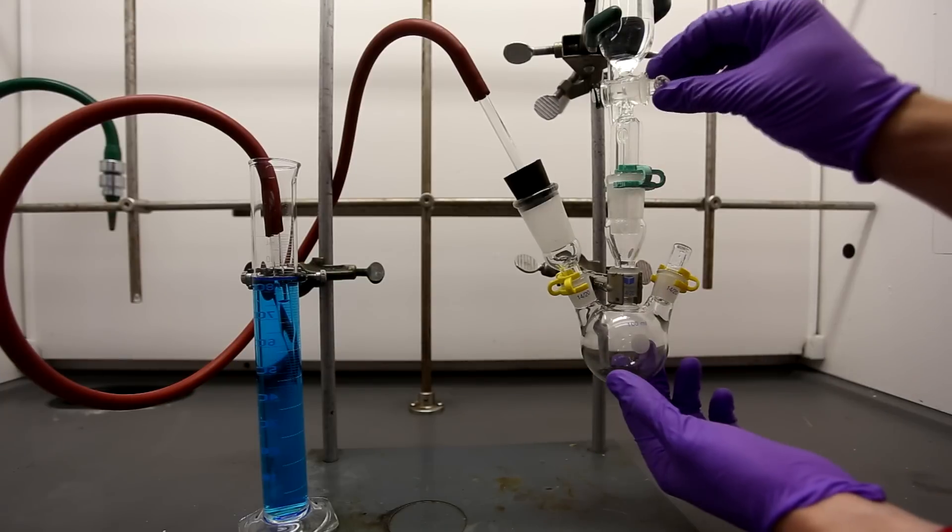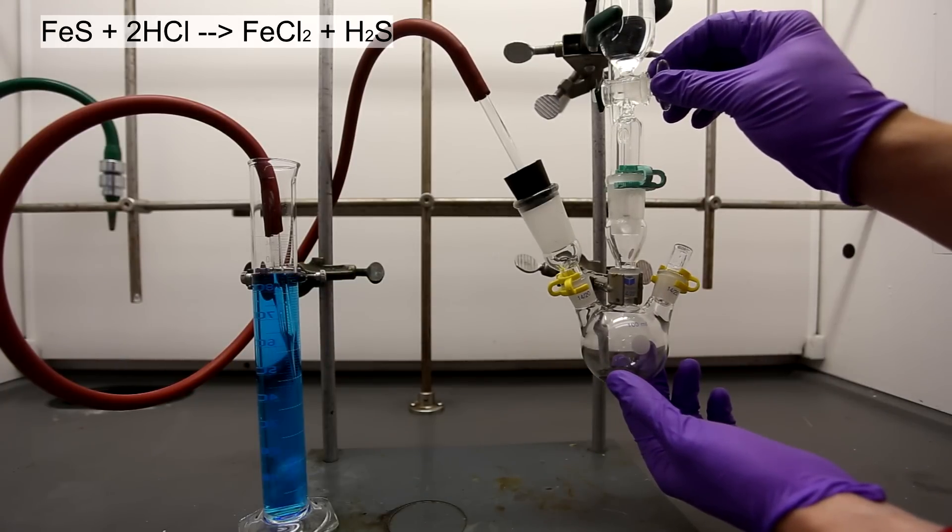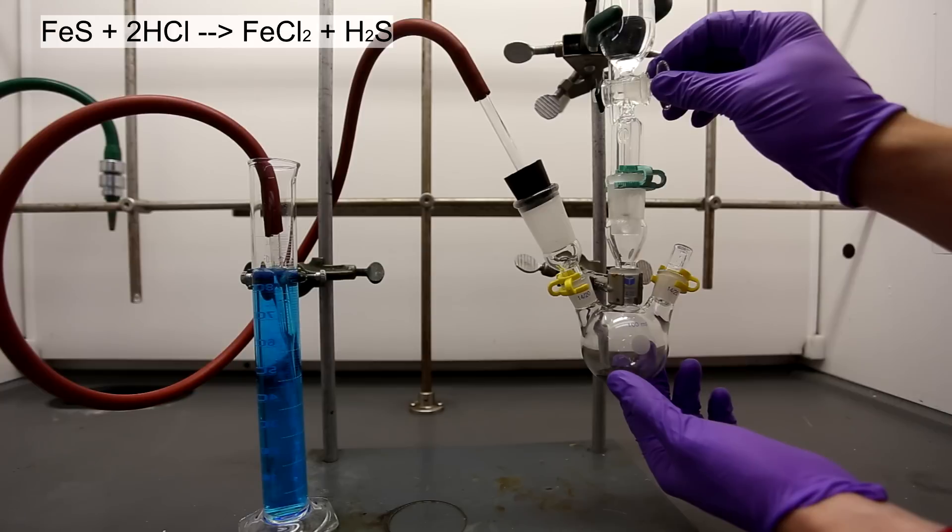The addition funnel is opened and the HCl is allowed to drip slowly onto the iron sulfide. This will produce the hydrogen sulfide gas according to the equation above: FeS + 2HCl → FeCl2 + H2S.